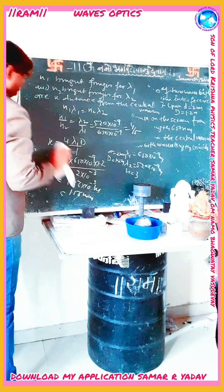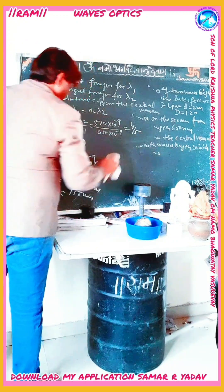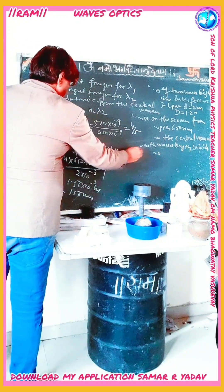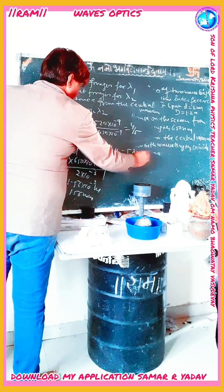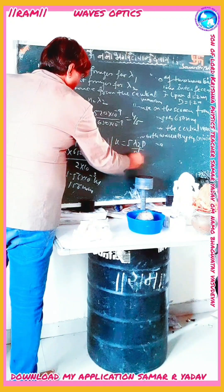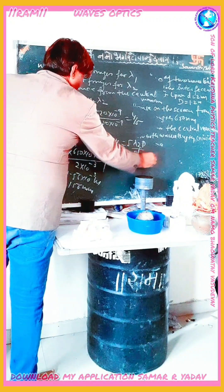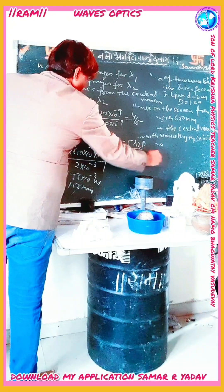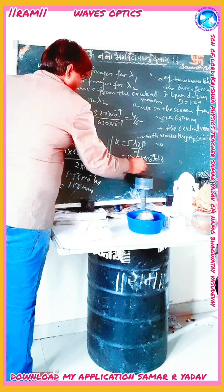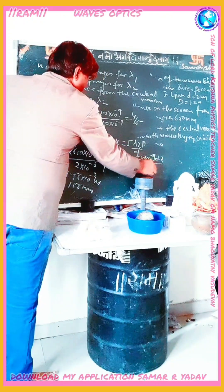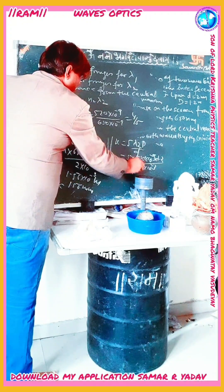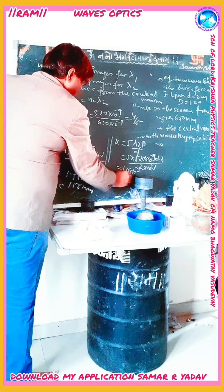Similarly for lambda 2, X is equal to 5 lambda 2 capital D upon small d. That is 5 into 520 into 10 to the power minus 9 into 1.2 divided by 2 into 10 to the power minus 3. We get 1.56 into 10 to the power minus 3 meter, equal to 1.56 millimeter. Both wavelengths confirm the same answer.